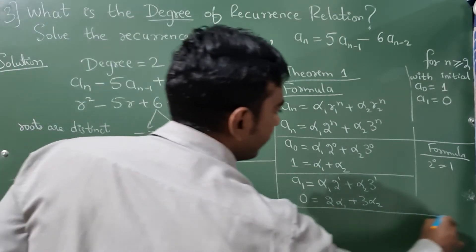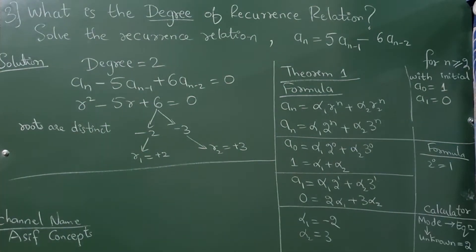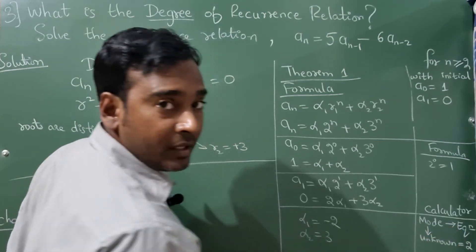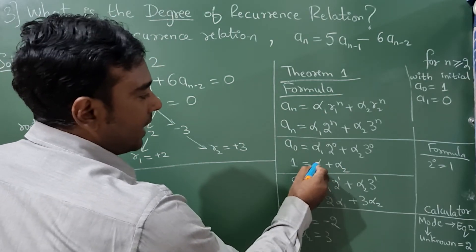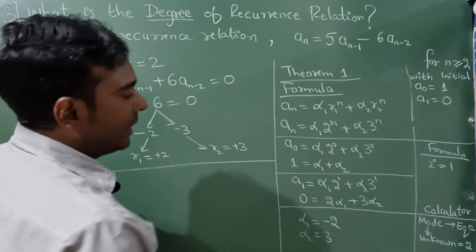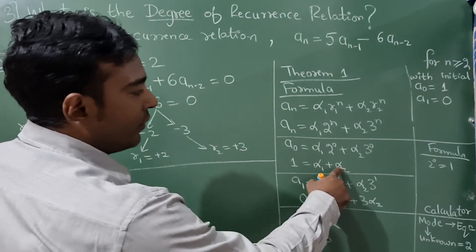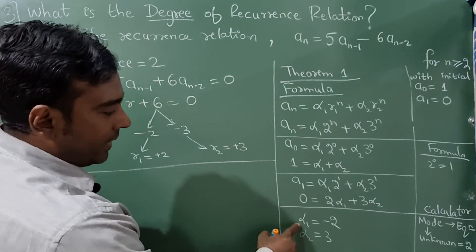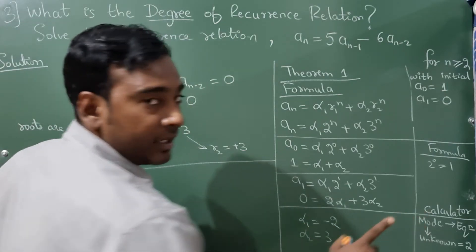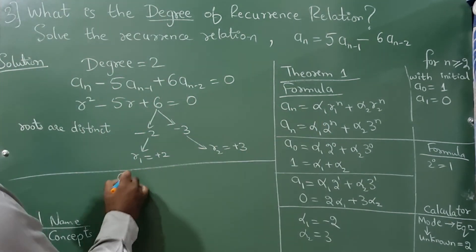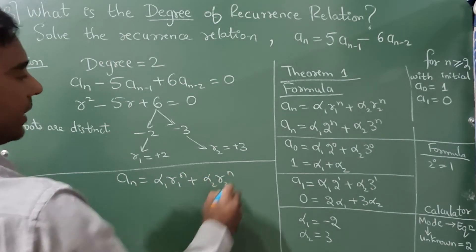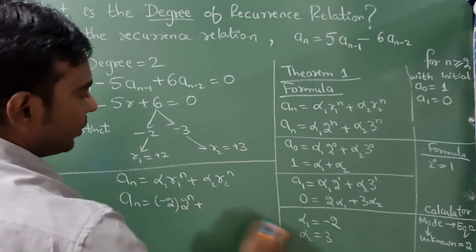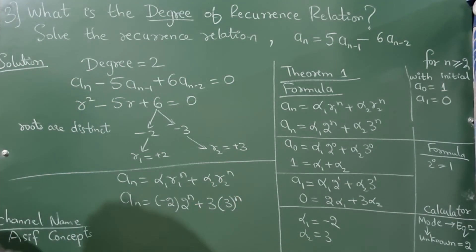Solving this system — you can use a calculator. Go to Mode → Equation → Unknown, select 2 unknowns (α₁ and α₂). Enter coefficients: for equation 1, coefficient of α₁ is 1, coefficient of α₂ is 1, RHS is 1; for equation 2, coefficient of α₁ is 2, coefficient of α₂ is 3, RHS is 0. You will get α₁ = -2 and α₂ = 3. Substituting into the main formula: aₙ = -2·2ⁿ + 3·3ⁿ. This is your final answer.